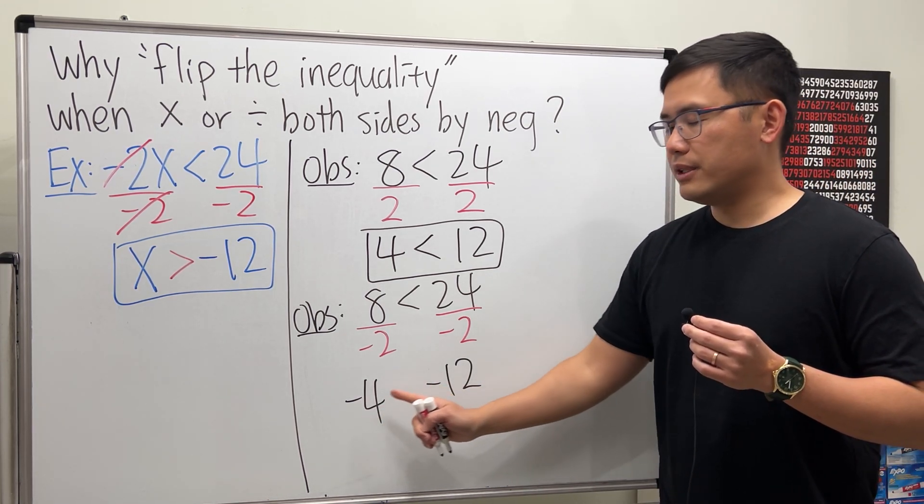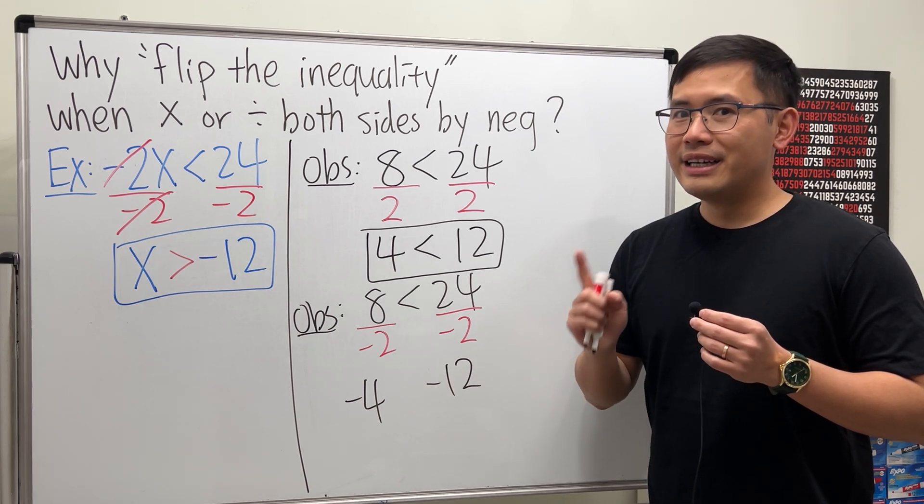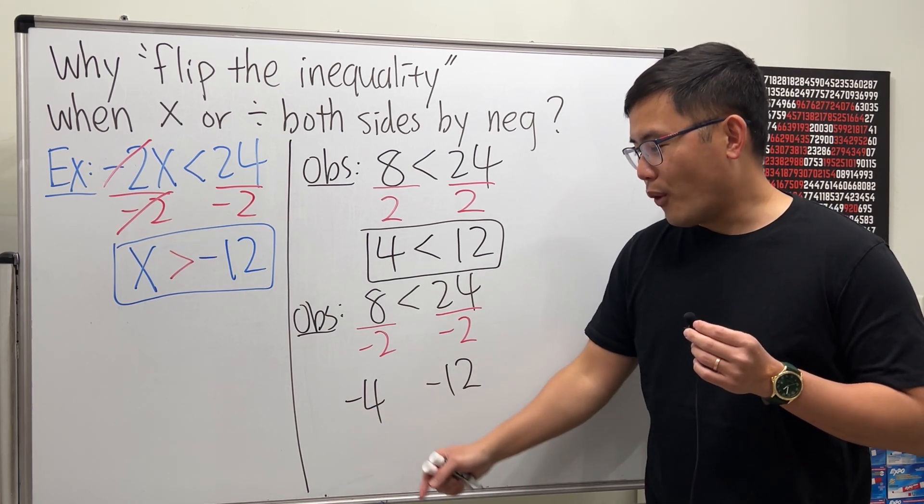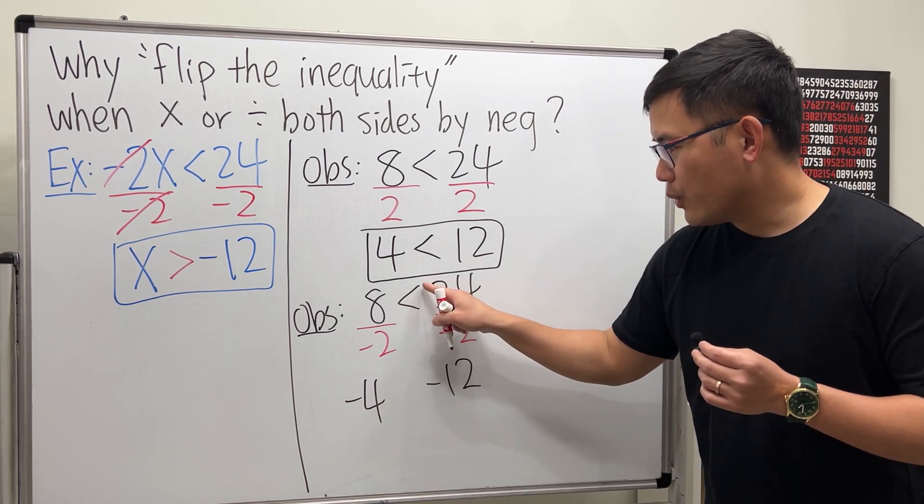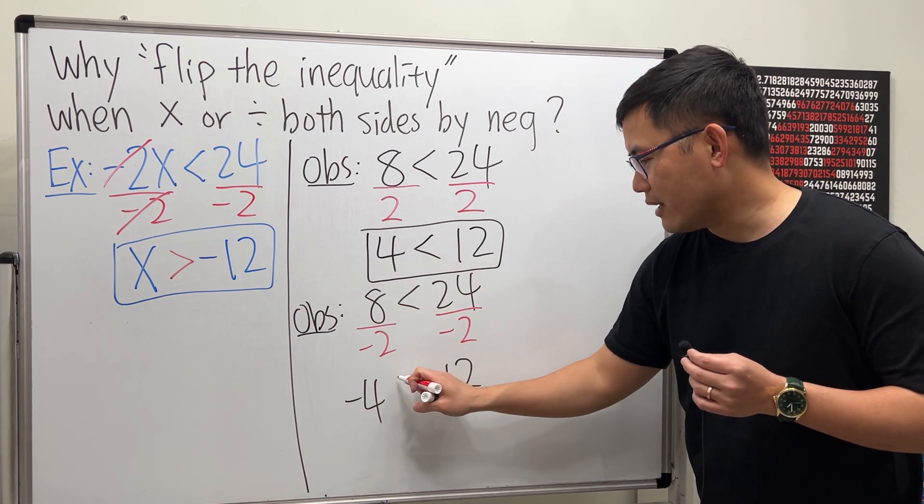Now take a look. Which number is bigger now? The answer is negative 4 is bigger. So instead of less than, we will have a greater than.